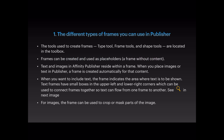Starting with the different types of frames you can use in Publisher: the tools to create frames are the type tool, the frame tool, and the shape tool, located in the toolbox on the left-hand bar. Frames can be created and used as placeholders — that's a frame without content. Text and images in Affinity Publisher reside within a frame; when you place images or text, a frame is created automatically for that content.